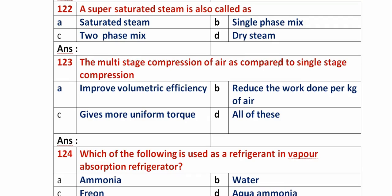Question 122: Superheated steam is also called as? Option A: saturated steam. Option B: single phase mix. Option C: two phase mix. Option D: dry steam. Option C, two phase mix, is the right answer. Superheated steam is a mixture of water and vapor, so it is a two phase mixture.